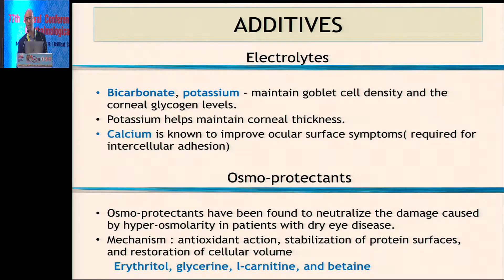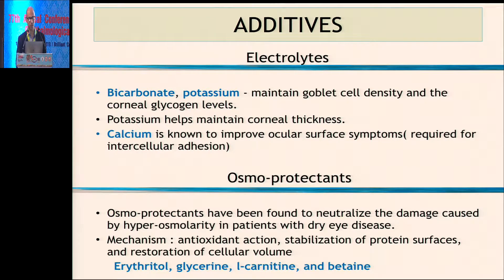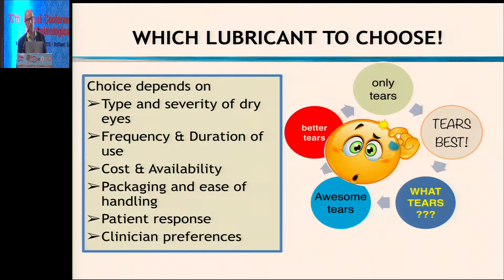Next, coming to the additives — this is value addition to your lubricant. Electrolytes have an important role to play: they maintain the health of goblet cells and corneal glycogen levels. Some lubricants also contain osmoprotectants like erythritol, glycerin, and L-carnitine, which maintain the osmolarity of the tear and the cell, thereby helping to maintain equilibrium.